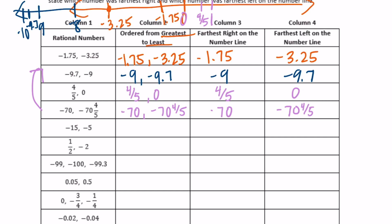Negative 15 and negative 5. What is greater? Negative 5 would be greater than negative 15 — for example, you'd rather owe someone 5 dollars than owe them 15 dollars. Furthest to the right would be negative 5. Furthest to the left is negative 15.